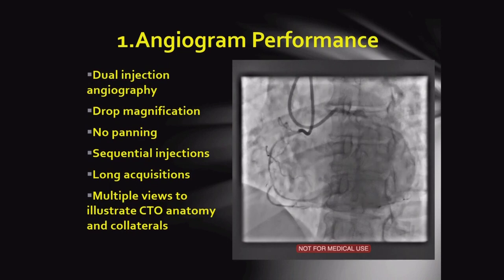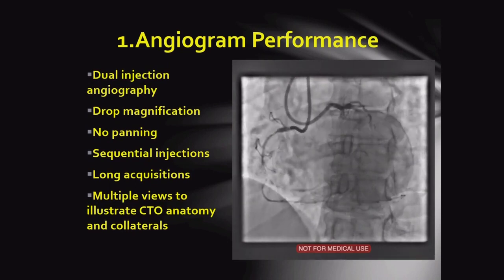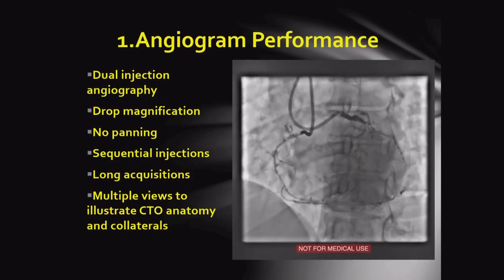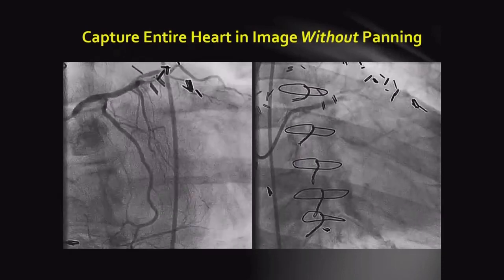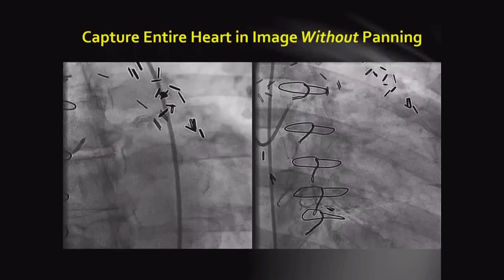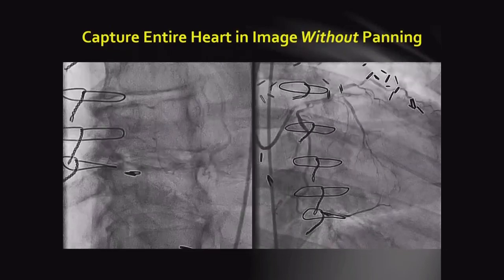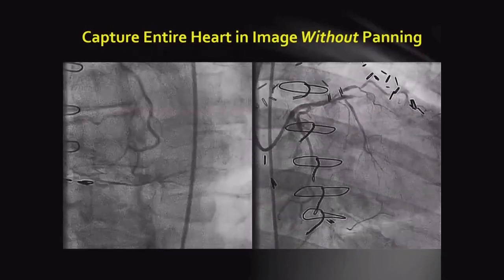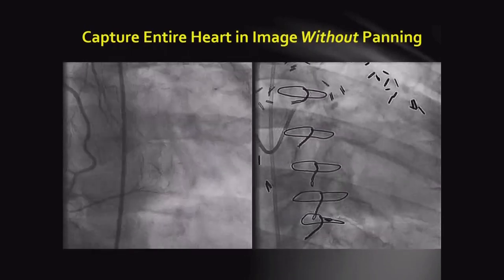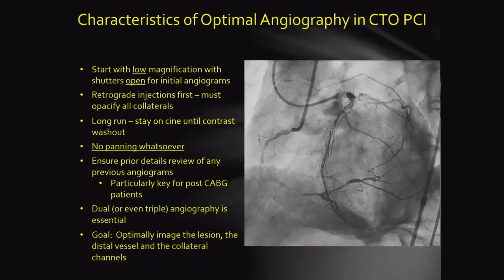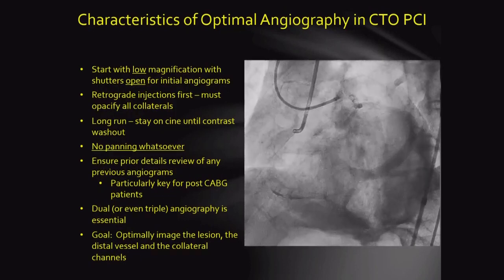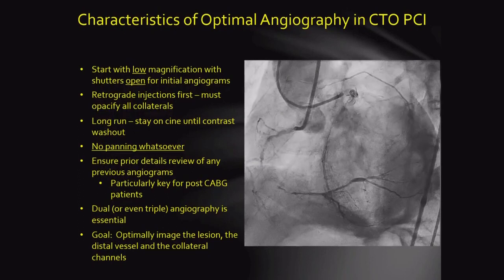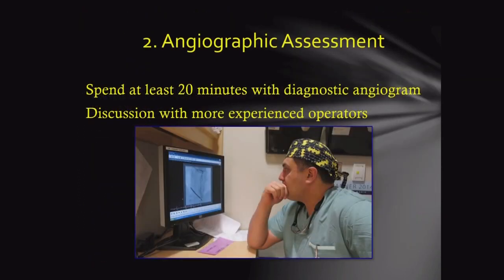First, you have to do a dual injection angiography — this is very important. Use drop magnification, no panning, sequential injection, long acquisition, and multiple views. The radiographer should not pan to chase collaterals and miss the main CTO anatomy. Start with low magnification, shutters open, retrograde injection first, then antegrade, long run, no panning. Also review the previous angiogram, and please spend 20 minutes on the diagnostic angiogram before doing a CTO to understand it well.